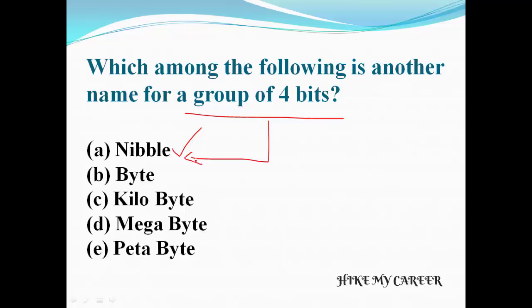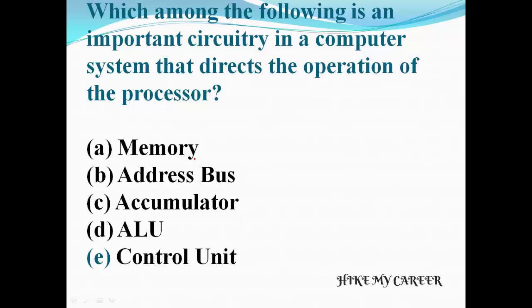Next question: which among the following is the important circuitry in a computer system that directs the operation of the processor? A: Memory, B: Address bus, C: Accumulator, D: ALU, E: Control unit. Answer is Control unit — the Control unit directs the operation of the processor.